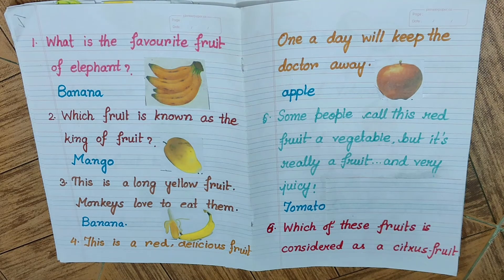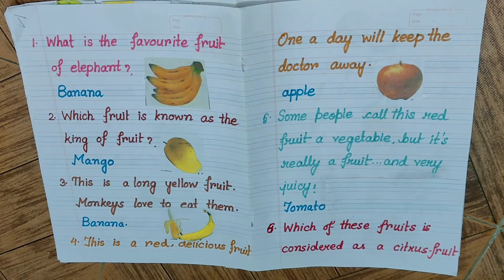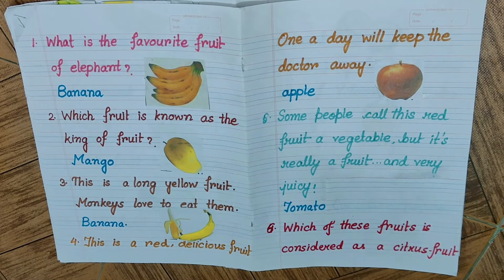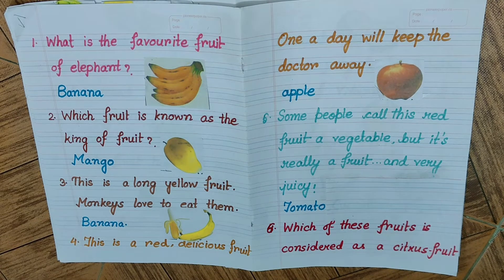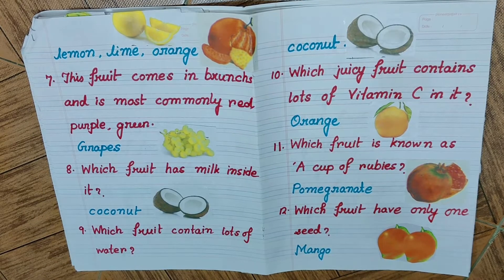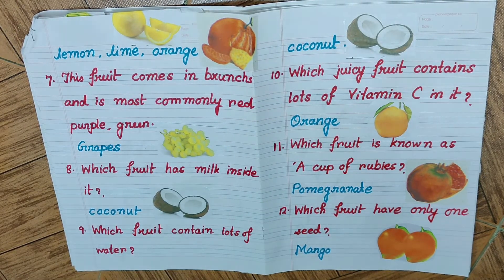Whenever you see a question providing the clue that it is a red fruit recognized as a vegetable, the answer will be tomato. Question number six: which of these fruits is considered a citrus food? The answer is lemon, lime, and orange — these are all known as citrus fruits.